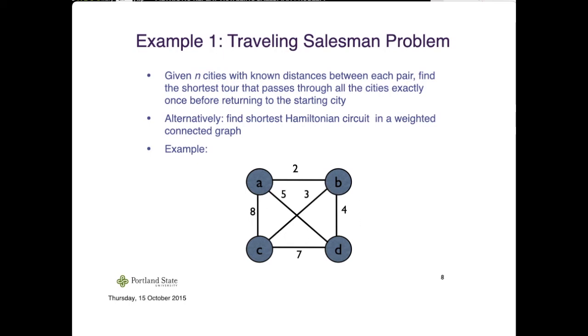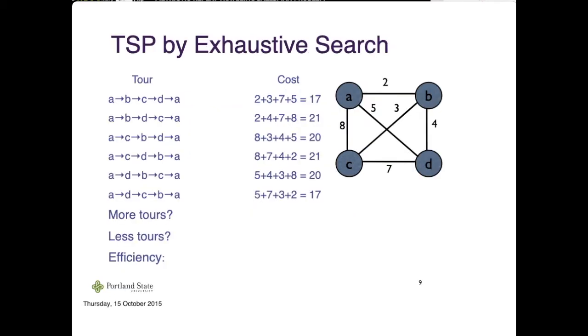For the exhaustive search, we need to explore all possible candidate solutions. If we really understood the problem, a tour is represented using a permutation of the set of vertices. For example, one permutation is A, B, C, and D, and then just append A in the last part since this is a complete graph.